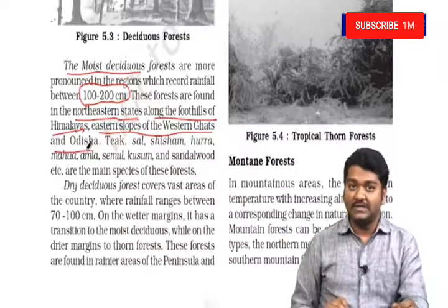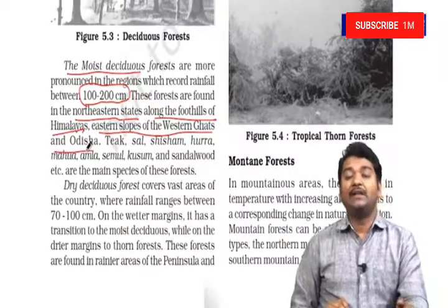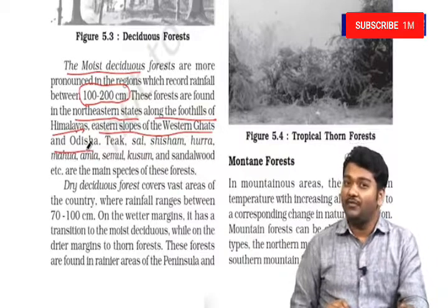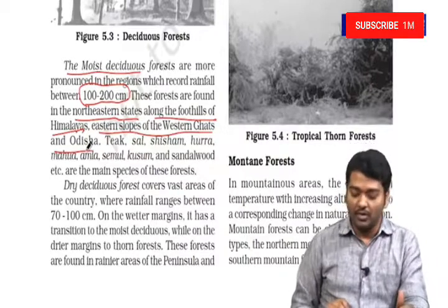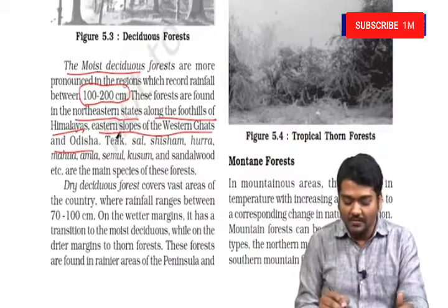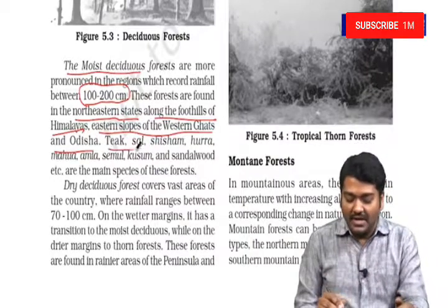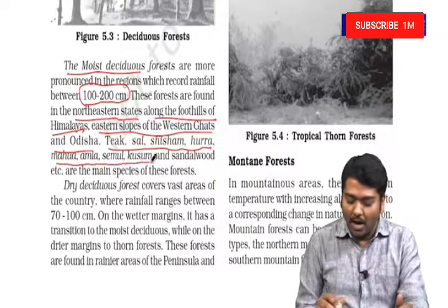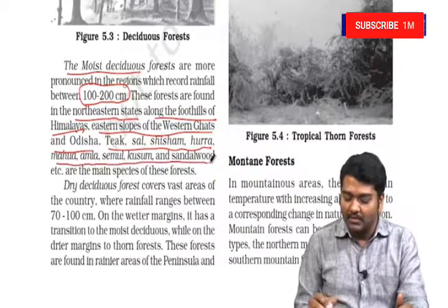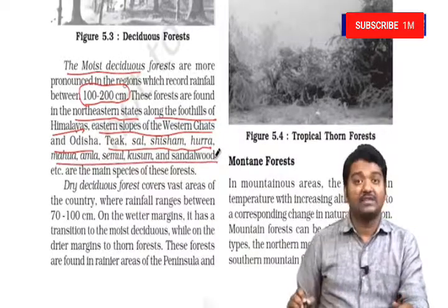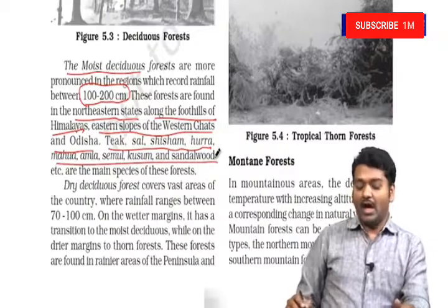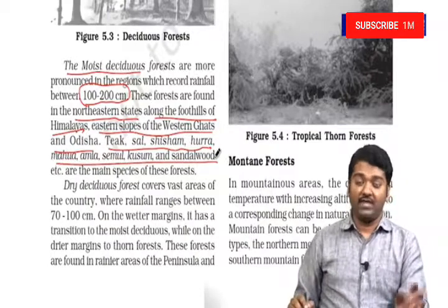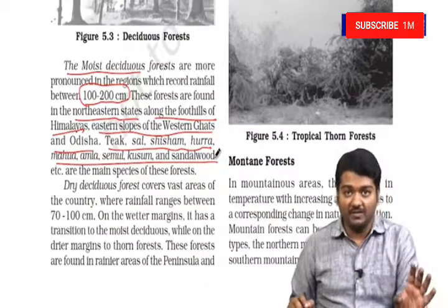Moist deciduous forests also receive rainfall from cyclones. Teak, Sal, Shisham, Hurra, Mahua, Amla, Semul, Kusum, and Sandalwood are some of the major trees present in moist deciduous forests.